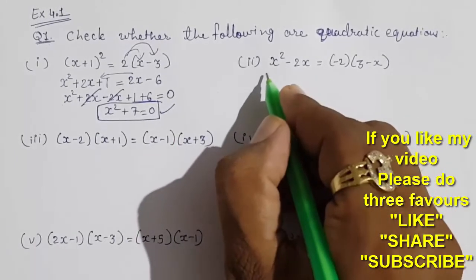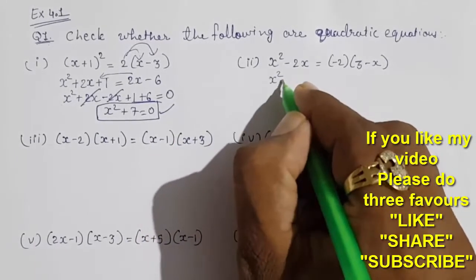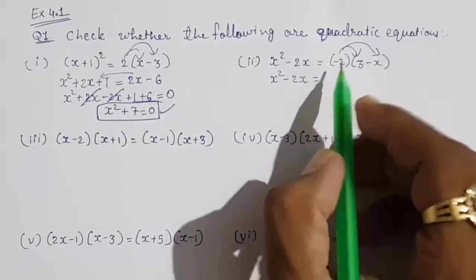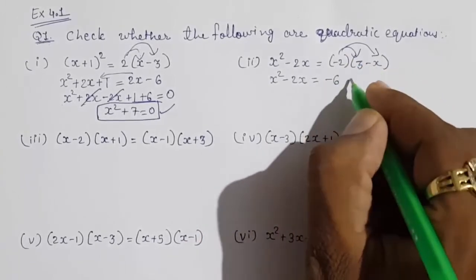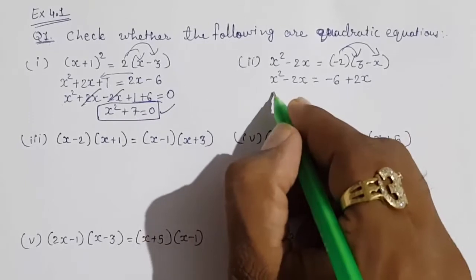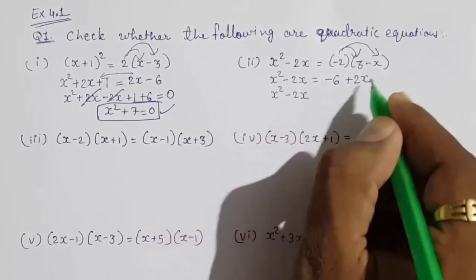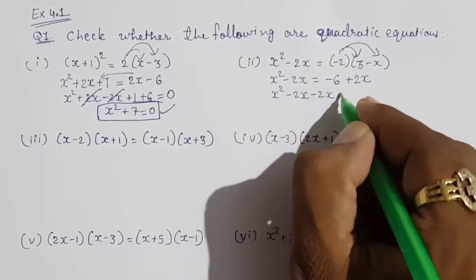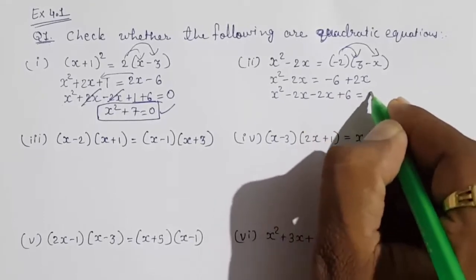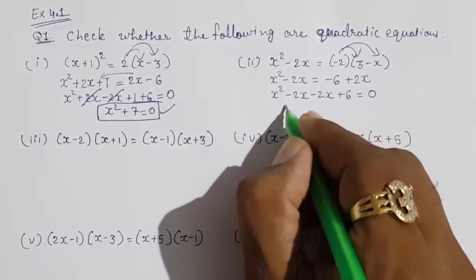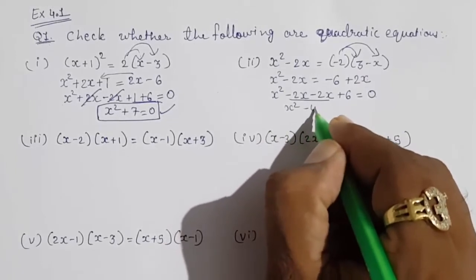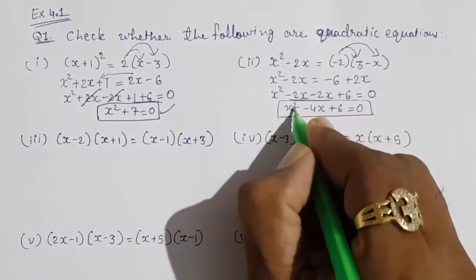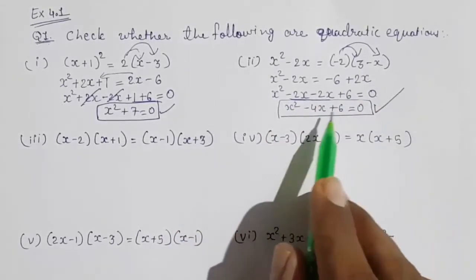Moving towards the next question: x² minus 2x. You cannot add or subtract, you have to keep it like that. But now minus 2 will get multiplied with both numbers: minus 6 and plus 2x. Taking all numbers to this side: x² minus 2x, this plus 2x will go on that side and become minus 2x. Now minus 6 on that side will become plus 6, equals to 0. So this becomes x² minus 4x plus 6 = 0. The highest power is 2, so this is also forming a quadratic equation.